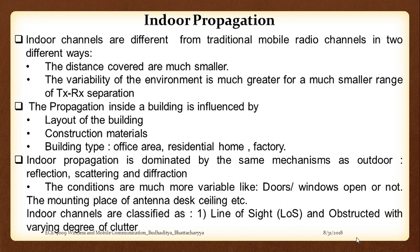In the last class we finished off with the outdoor propagation model, discussing Okumura and Hata as the two widely used practical path loss models. We did a numerical comparing the two models by finding out the L50 dB or mean attenuation. We observed that Okumura is more of a graphical representation requiring assumed parameters, whereas Hata, being purely analytical, gives a much better approximation.